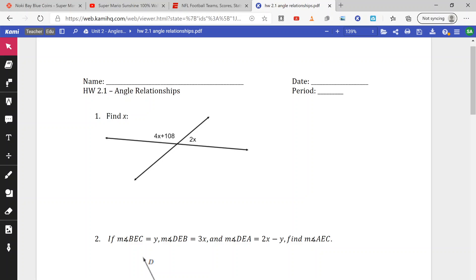In our first example here, we are told to find x. We are given 4x plus 108 and 2x here. So here we have a straight line. We know that lines equal 180.